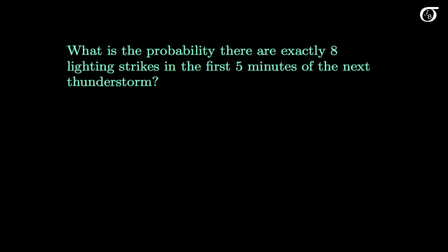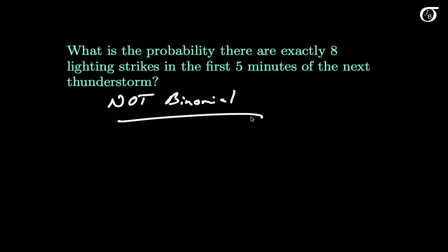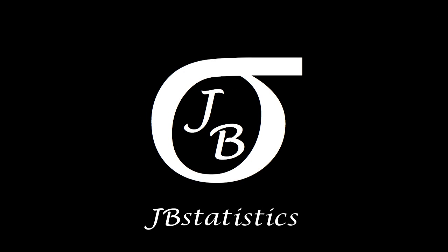What is the probability there are exactly eight lightning strikes in the first five minutes of the next thunderstorm? We are counting something — the number of lightning strikes — but we do not have a fixed number of trials. It is not like tossing a coin a hundred times or shooting a hundred free throws. There's a fixed timeframe of five minutes, but not a fixed number of trials, so the random variable X (number of lightning strikes) does not have a binomial distribution. Every time we have one of these problems, we have to think through whether the conditions of a binomial distribution are satisfied. If they are, then we can use the binomial formula.